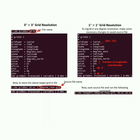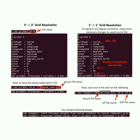Now run the command 'cdo remapbil' — this is the bilinear interpolation. If the dataset is in curvilinear form, the command would be different: use 'remapbic' in that case. Since this is a rectilinear dataset, bilinear interpolation is used directly. After 'remapbil', without any space, add a comma and the source grid file name, then a comma and a space, followed by the input file name and the output file name with extension. You will see a display of the processing, and the output file will be saved in the same directory.